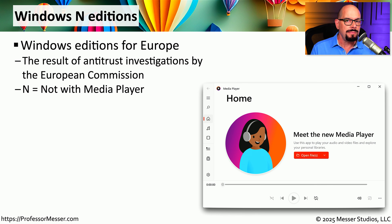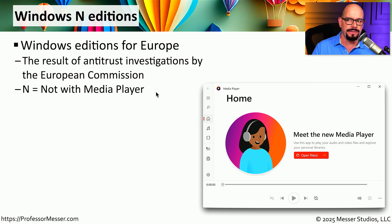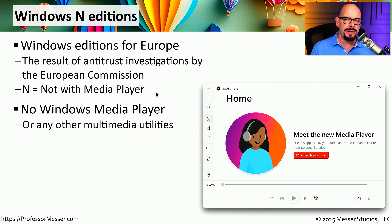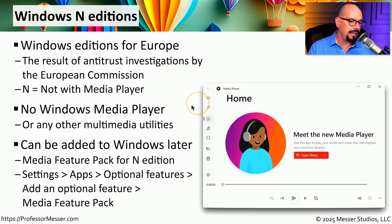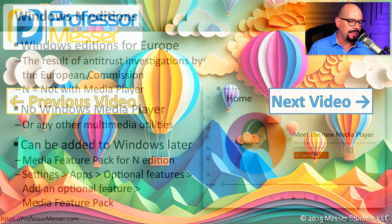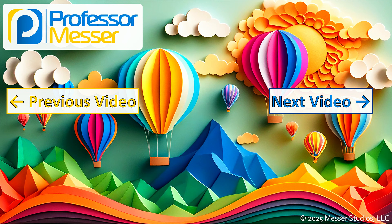If you're in Europe, you may be familiar with another edition of Windows known as the Windows N edition. The N means it does not come with any media player functionality — not only is there no Windows Media Player, but no other multimedia utilities are built in. Fortunately, these can be added later through the Media Feature Pack for N edition, found under Settings, Apps, Optional Features, Add an Optional Feature, and the Media Feature Pack.